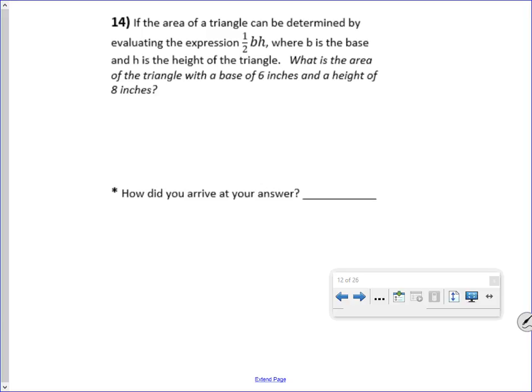If the area of a triangle can be determined by evaluating the expression 1 half base times height, where B is the base and H is the height of the triangle, what is the area of the triangle with a base of 6 inches and a height of 8 inches? All right, how did I get the answer? I substituted in. And I will get 24.